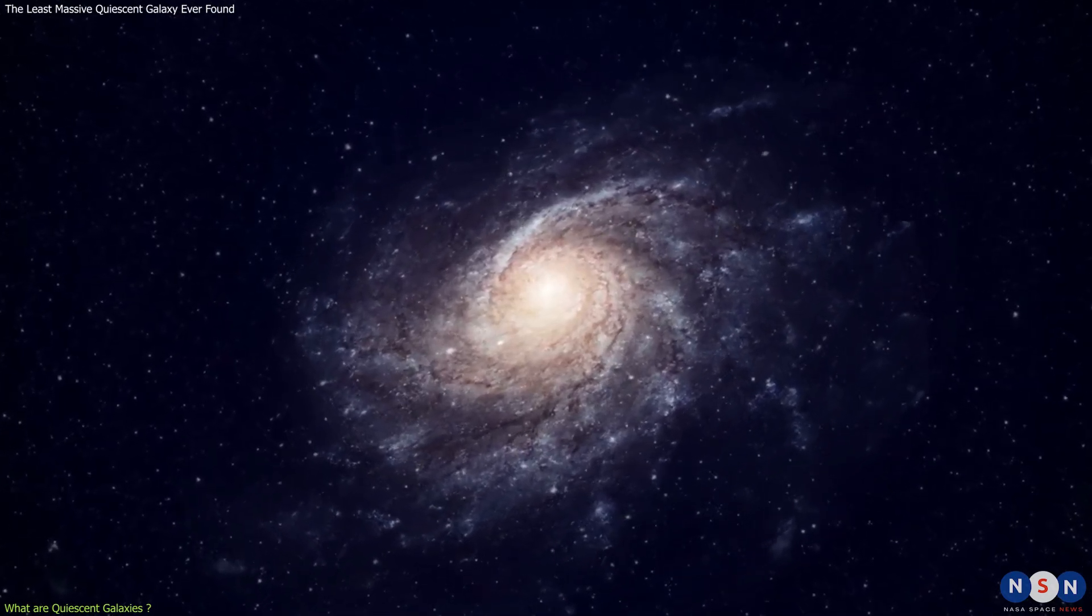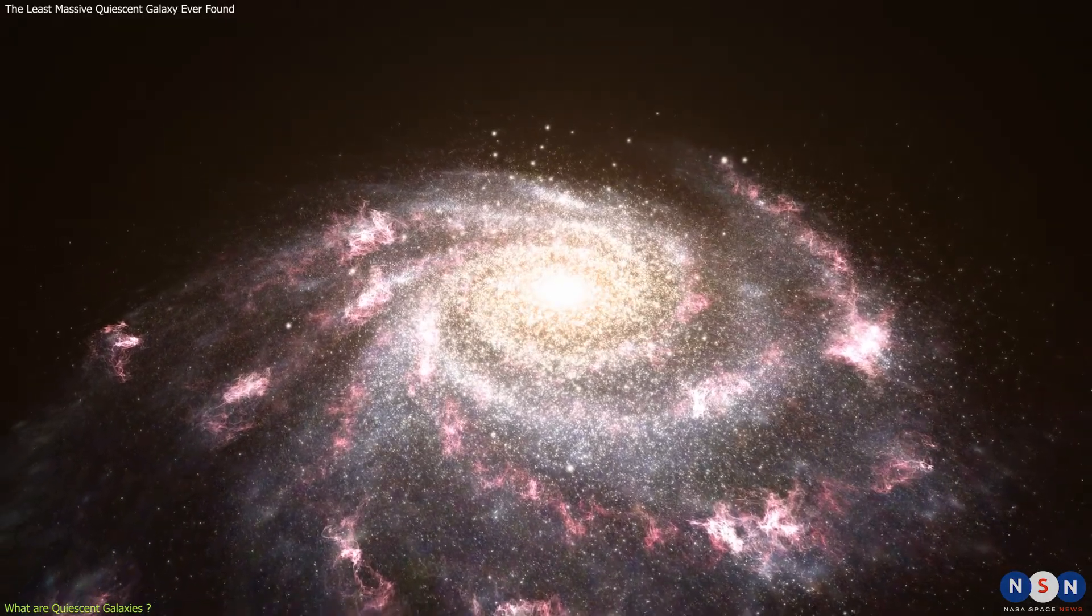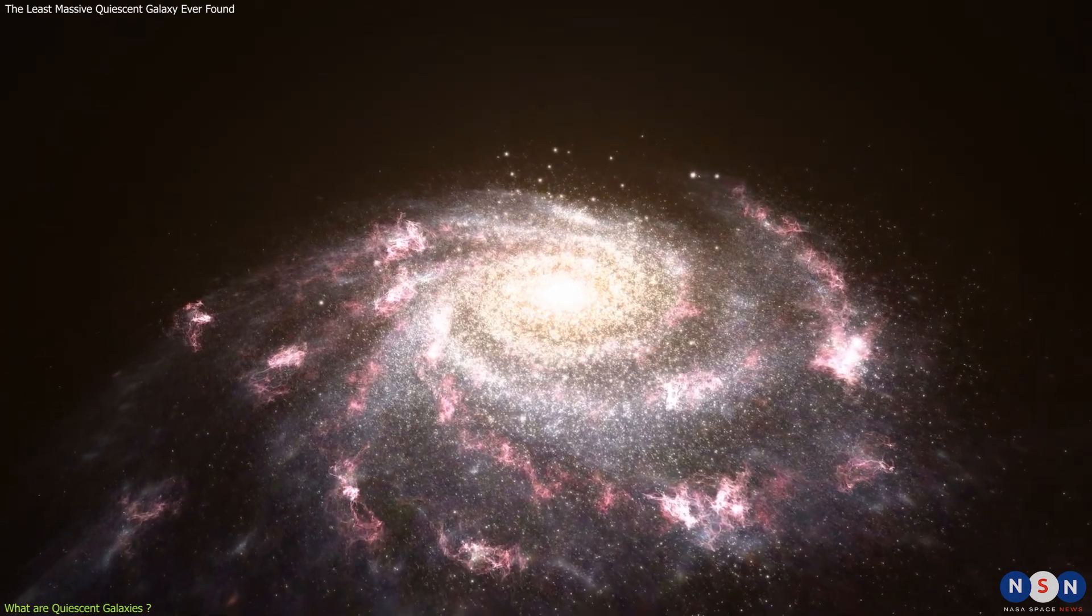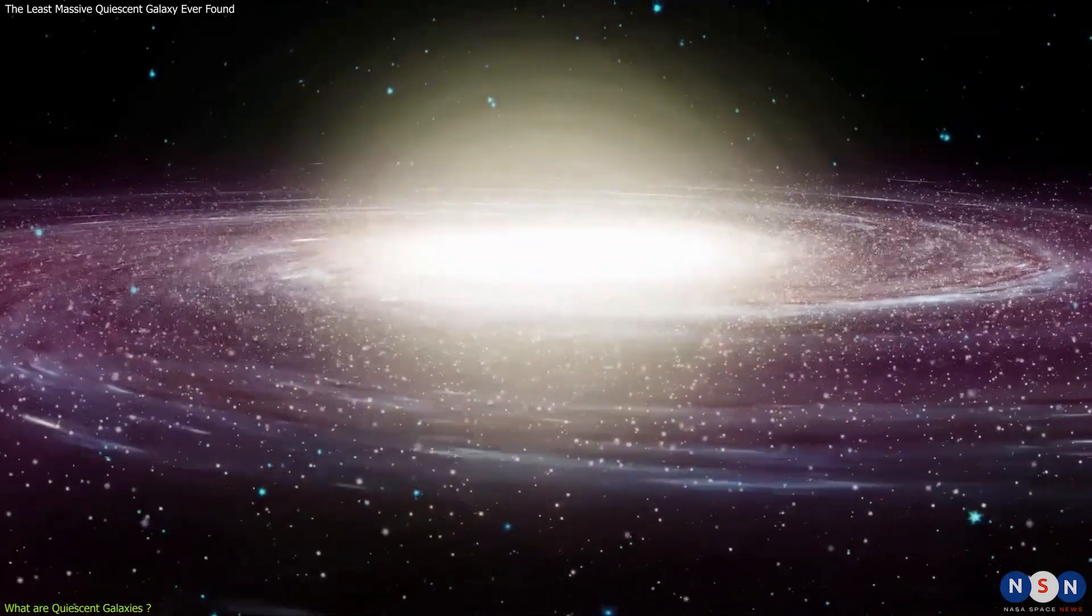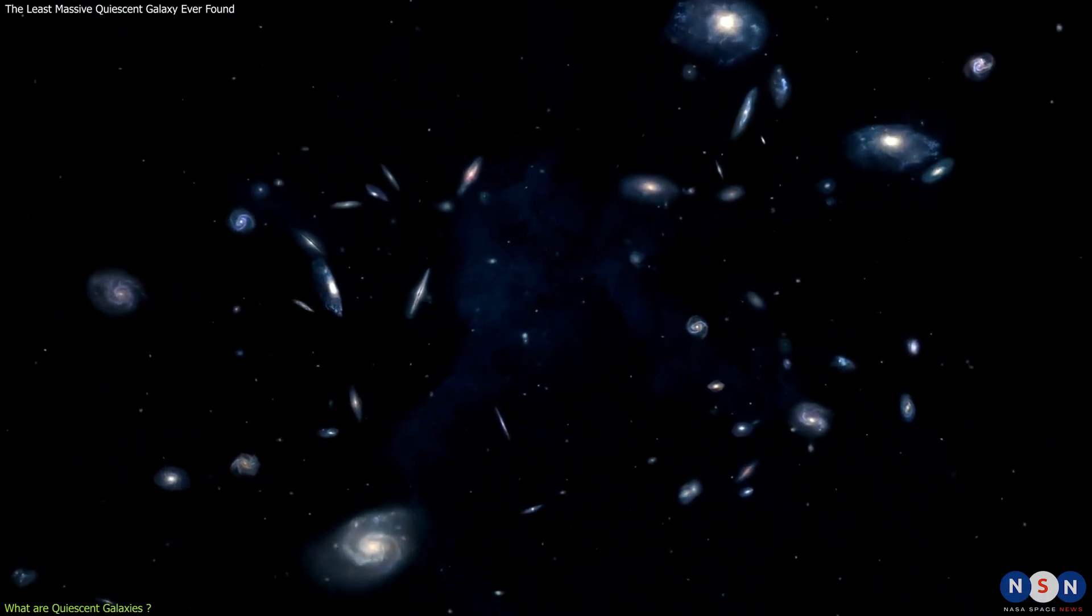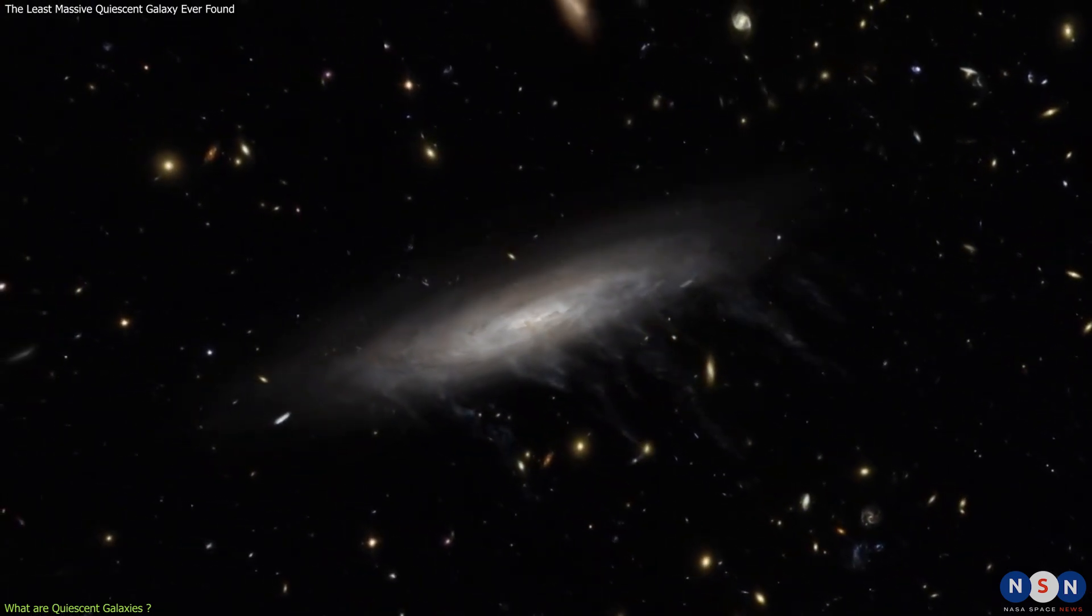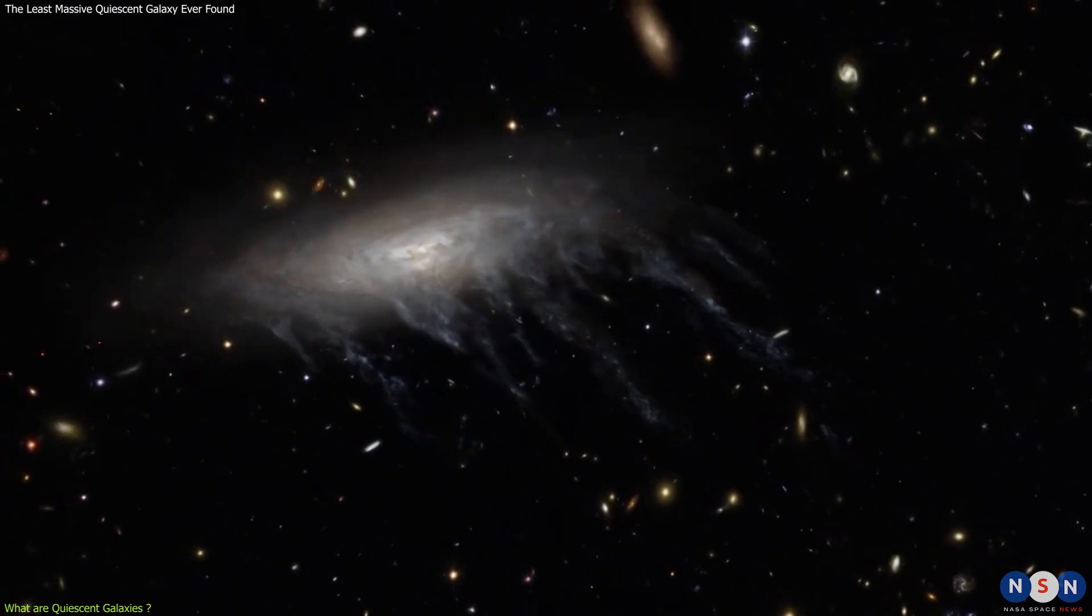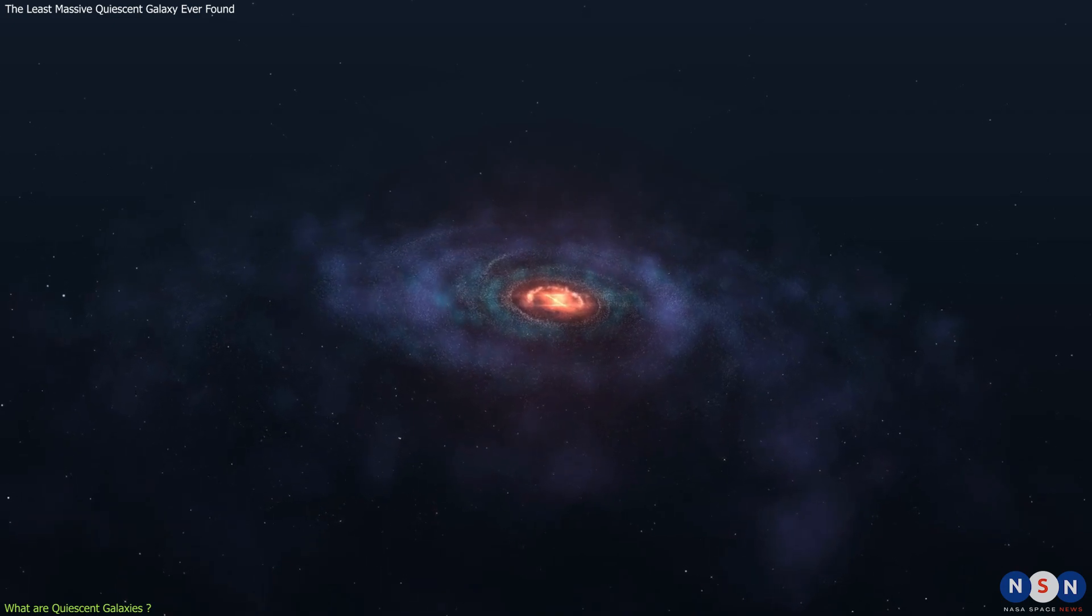But not all galaxies are like that. Some galaxies are quiescent, which means they have stopped forming stars. These kinds of galaxies are usually massive and old, having used up most of their gas in previous episodes of star formation. They are also physically compact, meaning they have a high density of stars in a small volume. They are commonly found in galaxy clusters where they are influenced by their surroundings. For example, quiescent galaxies can lose their gas due to interactions with other galaxies or the hot gas that fills the space between them. This prevents them from forming new stars and makes them fade away over time.